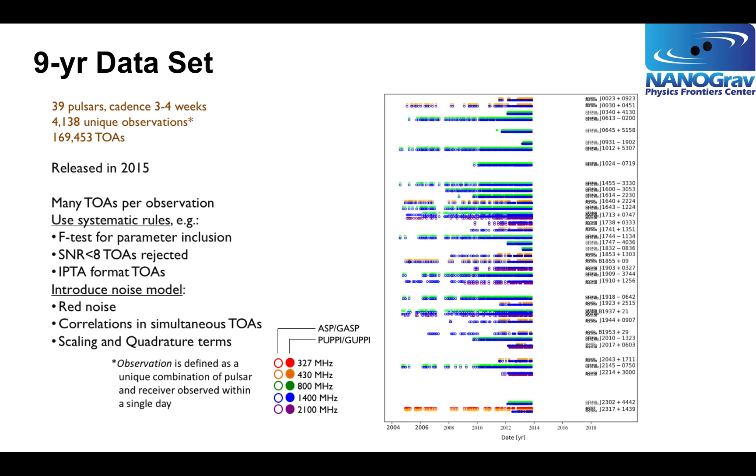The nine-year data set more than doubled the number of pulsars to 39, more than quadrupled the number of observations to more than 4,000, and increased the number of TOAs by an order of magnitude. We have 170,000 TOAs. The nine-year data set was also our first attempt to do things in a very systematic way. We had very systematic rules for which parameters we would include in data sets. We would systematically exclude low signal-to-noise ratio data. We organized our TOAs in a way compatible with the International Pulsar Timing Array standards. We introduced standardized noise models and did many other things to very much regularize our data collection.